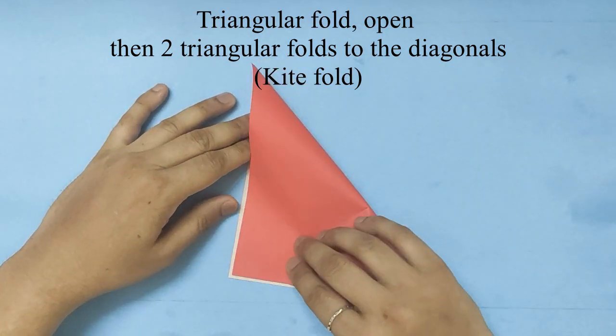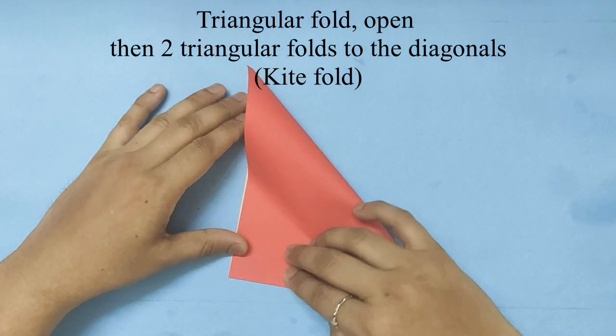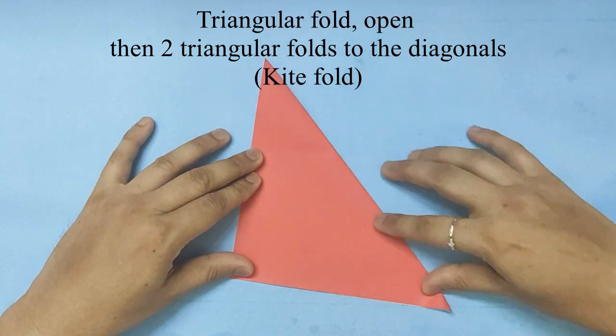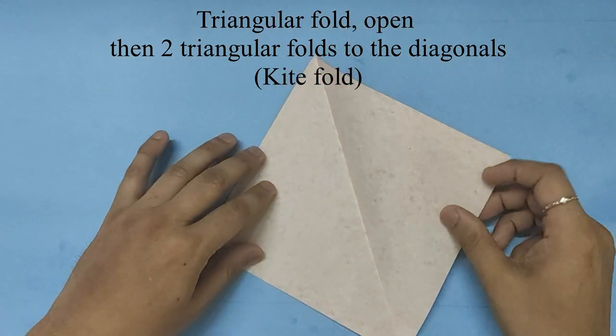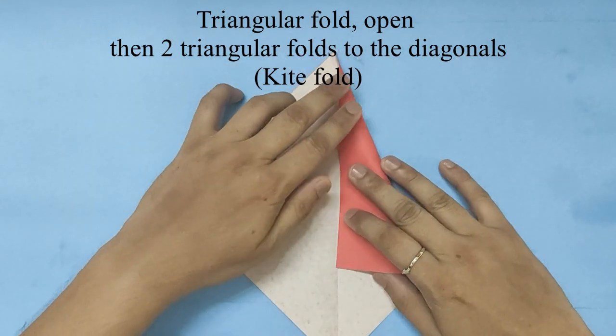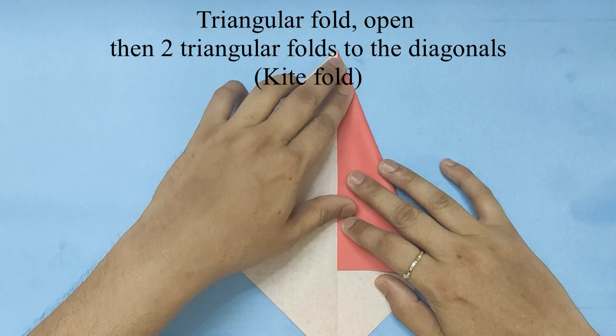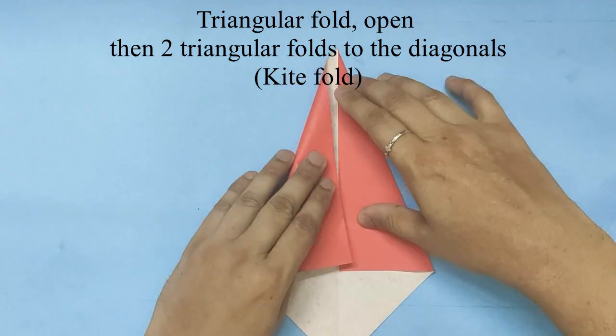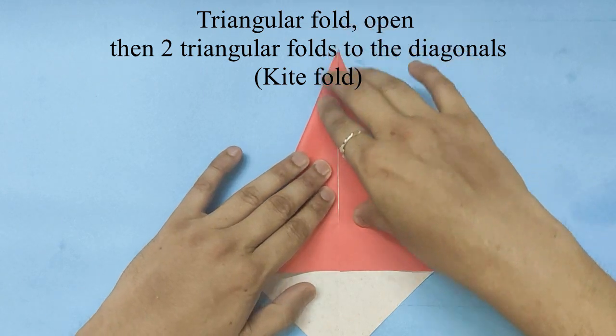Fold the square into a triangular fold, open it, then bring the side to the diagonals and that's your kite fold.